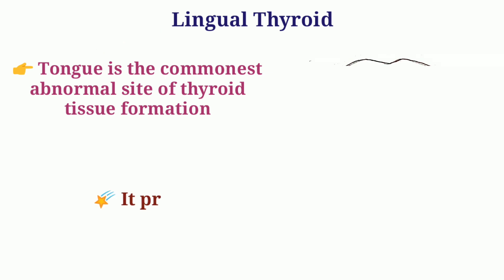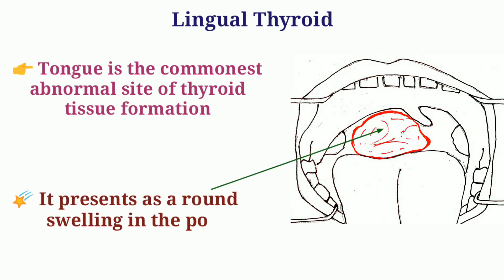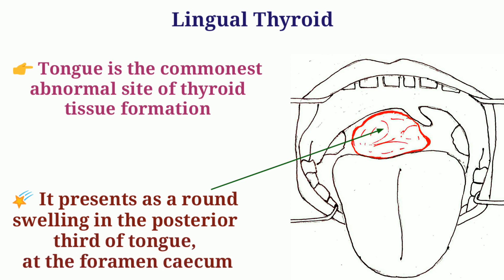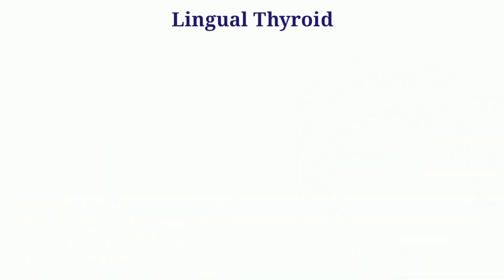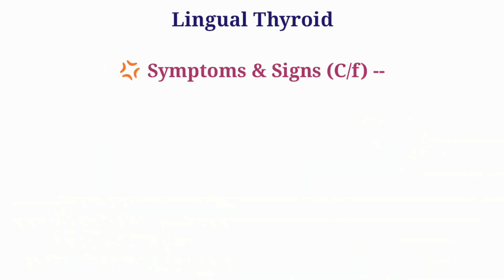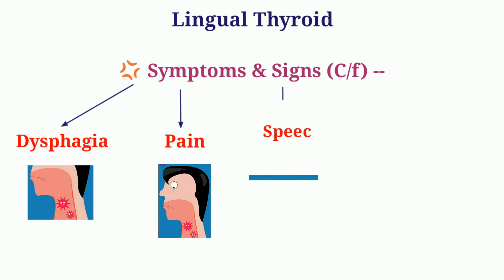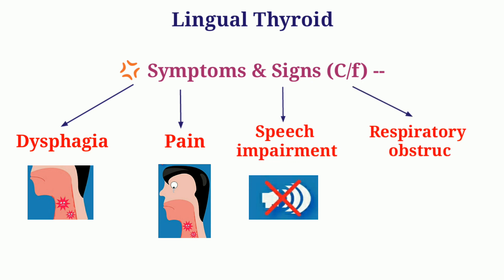Lingual thyroid presents as a round swelling in the posterior third of the tongue at the foramen cecum. It may be the only existing thyroid tissue in the body. Lingual thyroid is more common in females. Patients with lingual thyroid face dysphagia, pain, speech impairment, respiratory obstruction, and hemorrhage.